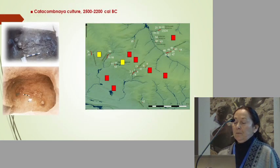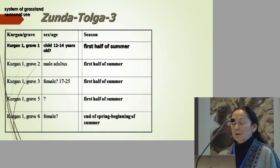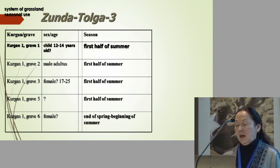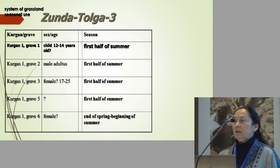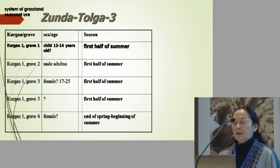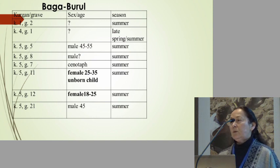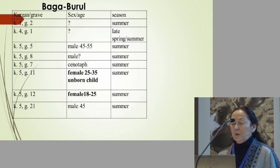Catacomb culture population developed during the beginning of the aridization of climate. We have thousands of kurgans and thousands of graves. Now we have summer seasonal campsites, and the seasonality of the campsites supports the idea of the system of grassland seasonal use which was proposed many years ago. But that seasonal data was based on the graves — now we have data which comes from the campsites.